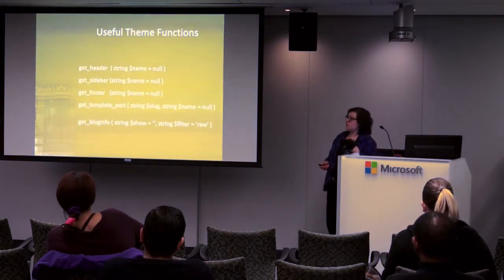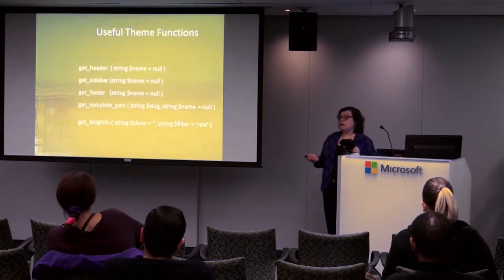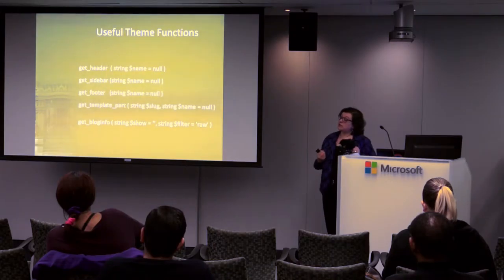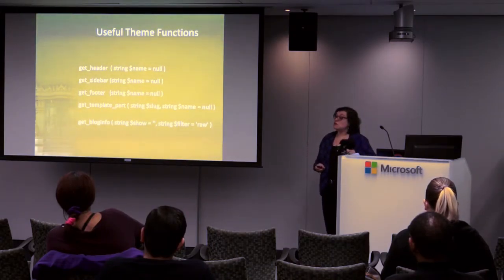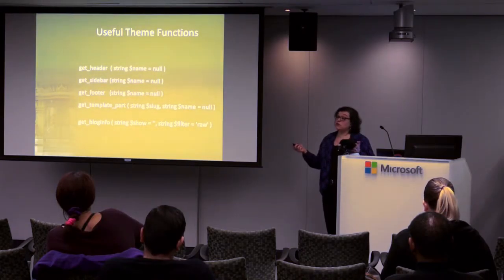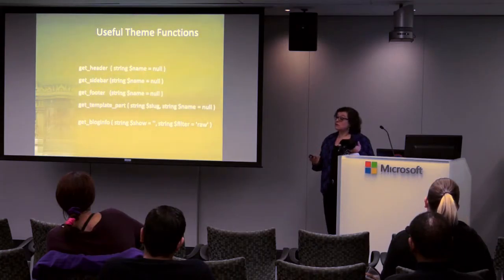A quick hit on useful theme functions: get_header(), get_sidebar(), get_footer() — you see them in all your theme files. What you may not know is that you can also pass in a string, which changes which file it's looking for. So get_header() pulls in header.php, but get_header('news') looks for header-news.php. Same thing with sidebar and footer. I use it most with sidebars — it can be a great way to differentiate different sections of the site with different sidebar areas.